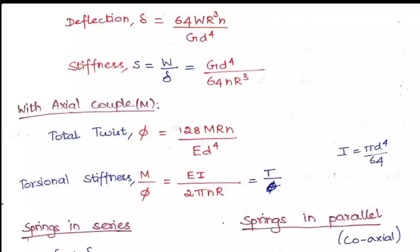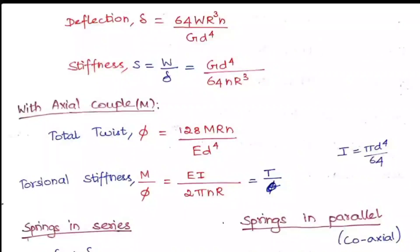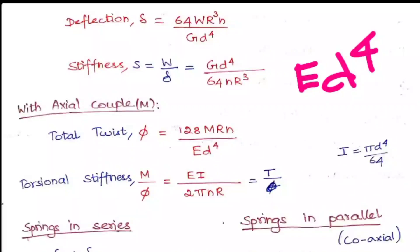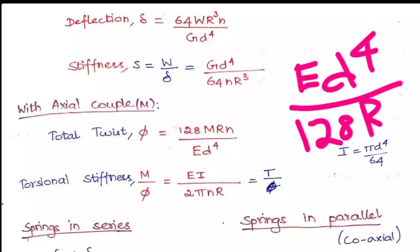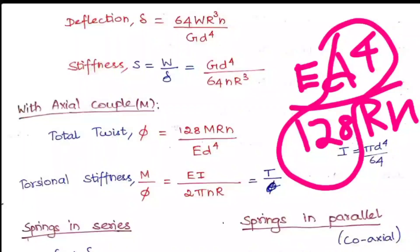The torsional stiffness is M/θ — similarly to W/δ for axial load. Substituting gives stiffness = ED⁴ / 128RN. Since the second moment of area I = πD⁴/64, we can substitute: πD⁴/64 times 2 gives 128, so the formula can also be written as EI / 2πNR, which is also denoted as T/θ.